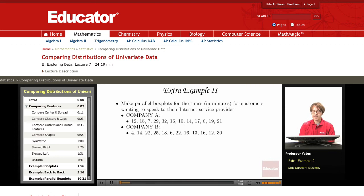And then finally let's look at another example. We want to make parallel box plots for the times in minutes for customers wanting to speak to their internet service provider. So what we want to do first of all to make the box plots, we need to order the data from lowest to highest.